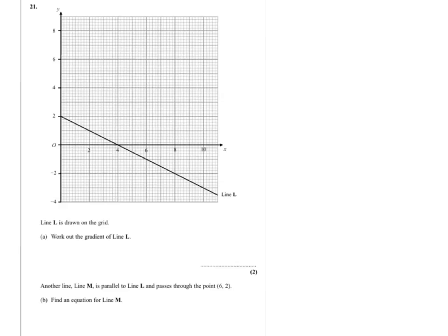So in the first part of the question, we're required to find the gradient of line L. Now the gradient of a straight line can be found by looking at the movement between two points, comparing how far we move up or down to how far we move across.